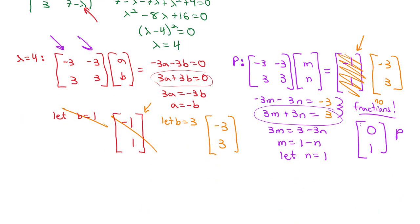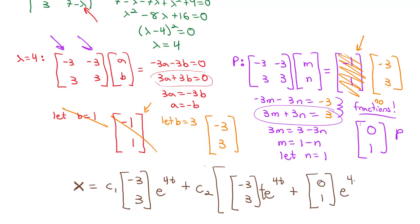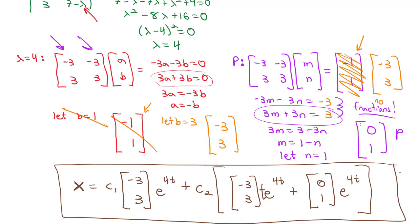So now I've got my p and we're ready to express the final answer to this system of equations. Our x vector equals c1 times my eigenvector negative 3, 3, times e to the 4t, plus c2 times the eigenvector negative 3, 3, e to the 4t times t to make it linearly independent, and we add the p, which is 0, 1, times e to the 4t. Now we've got our solution to the system of differential equations.